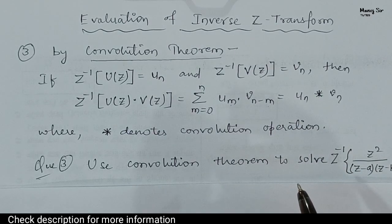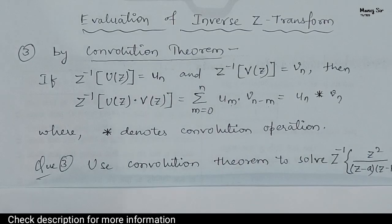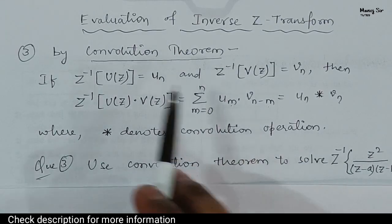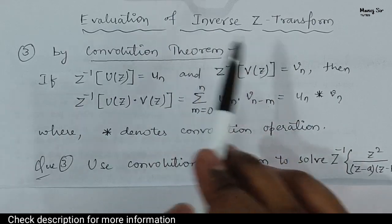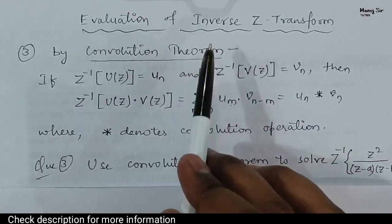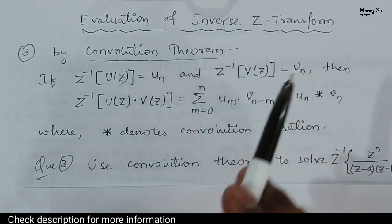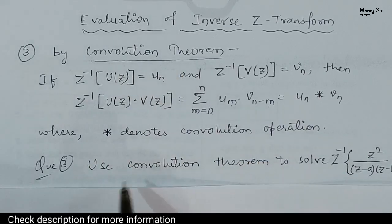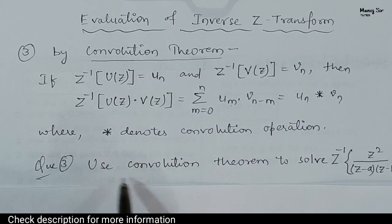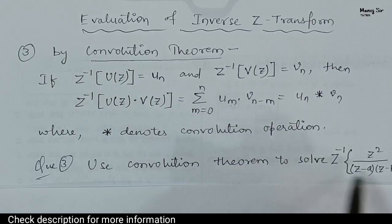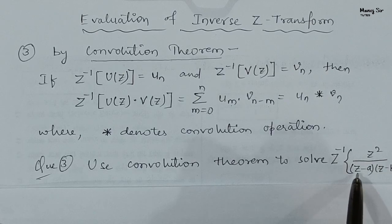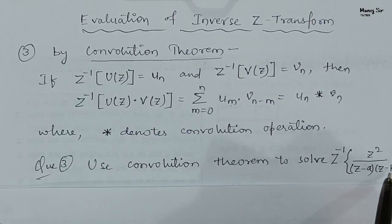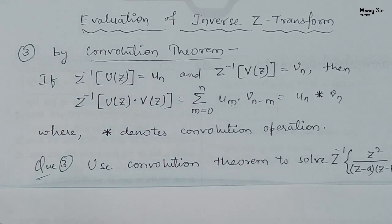Now we will start solving a very important problem based on the convolution theorem. We are going to evaluate the inverse Z transform using this convolution theorem. The problem says: use the convolution theorem to find the inverse Z transform of Z² / ((Z − A)(Z − B)).